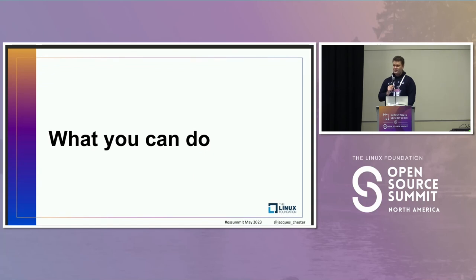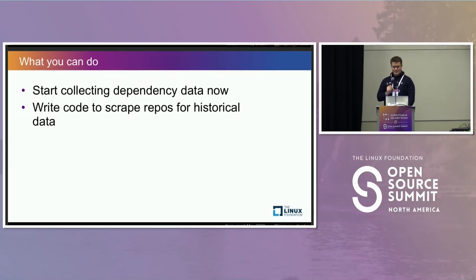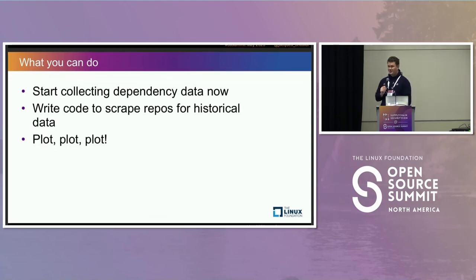What can you do if you want a cool plot like that? First, start collecting dependency data now. There's no end of tools, projects, and vendors emerging — you can roll your own, but I wouldn't recommend it; the vendors and open source projects are getting pretty good. But that won't cover historical data — I haven't seen any vendors looking up historical data the way we did, so you'll need to write some scraping logic. The diagram and slides are on the site. I really recommend using SQLite — it's magnificent. Normalize your data; I will die on this hill. And plot things — once you have data in normalized format, you can ask arbitrary questions, and so often the thing that really moves minds is a plot.